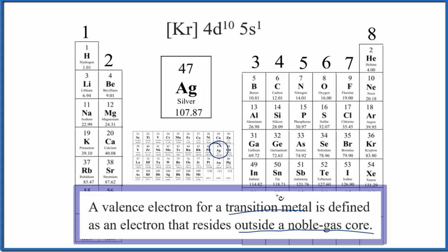At the same time, we know that silver, it only forms ions that are one plus. So it really, in practice, it only loses this 5s1 here when it forms chemical bonds.